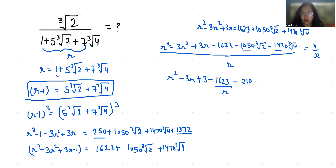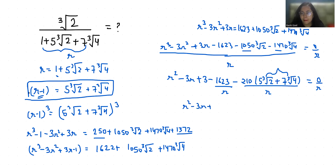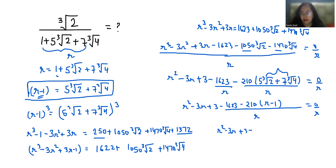This equals 0 over R, and the expression 5 times cube root of 2 plus 7 times cube root of 4 over R equals R minus 1, so we can replace it. So this becomes plus 210.